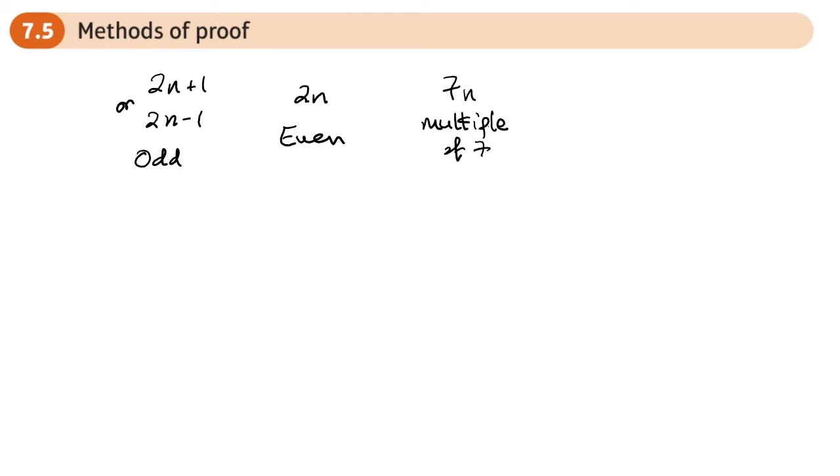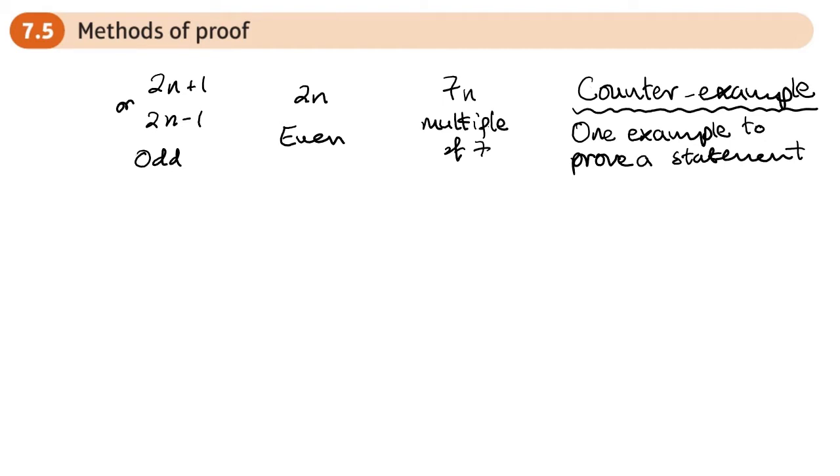And we have something called a counter example. A counter example is one example you choose to prove that something isn't true. So one example, you only need one example to prove a statement is not true.